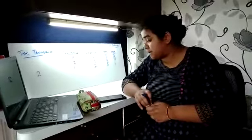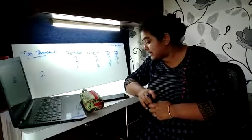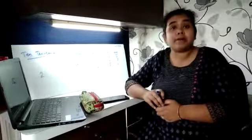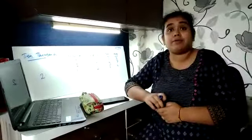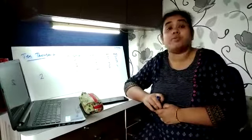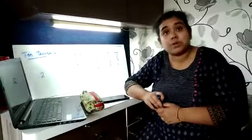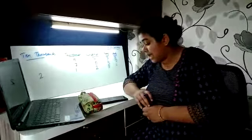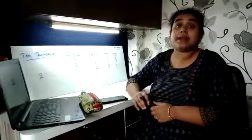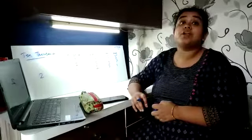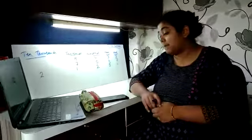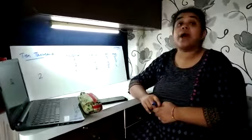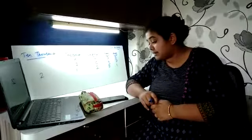Give the place value of the underlined digit in the following numbers. The number that is underlined — we have to write the place value of that particular number. Let us see. 286: the underlined number is 2. That means the place value of 2 is 200.